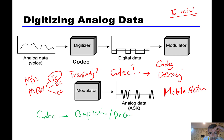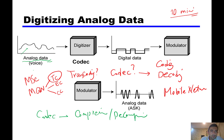Why do we compress data? Because we have analog data with lots of information. Nyquist and Shannon, two scientists, found that not all of this information is necessary for us to recognize a voice. So they proposed a very famous theorem that is still valid today.